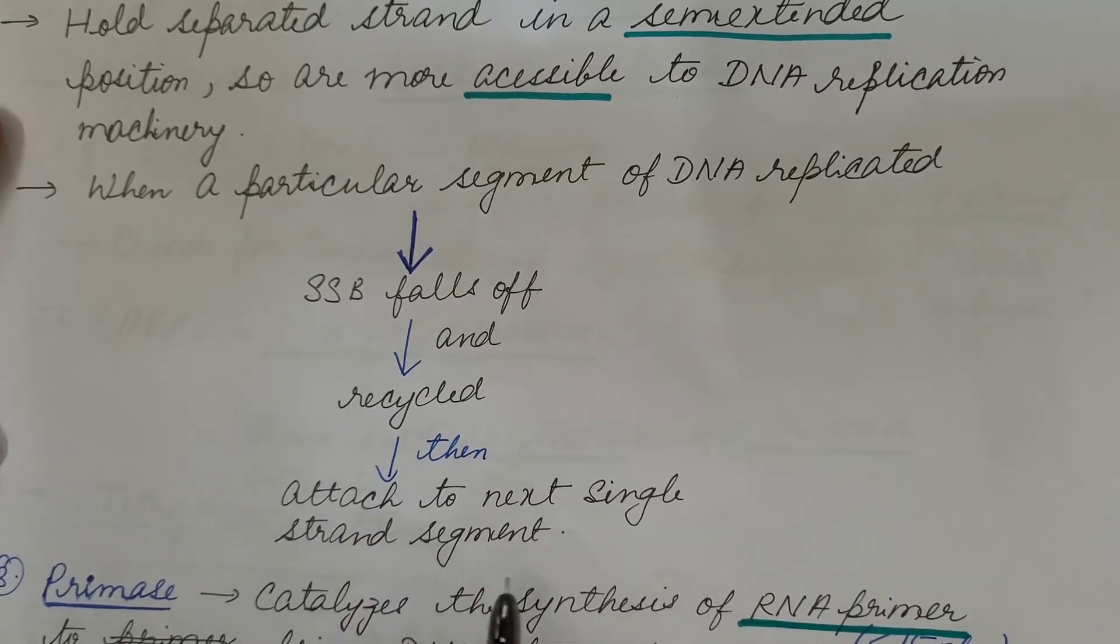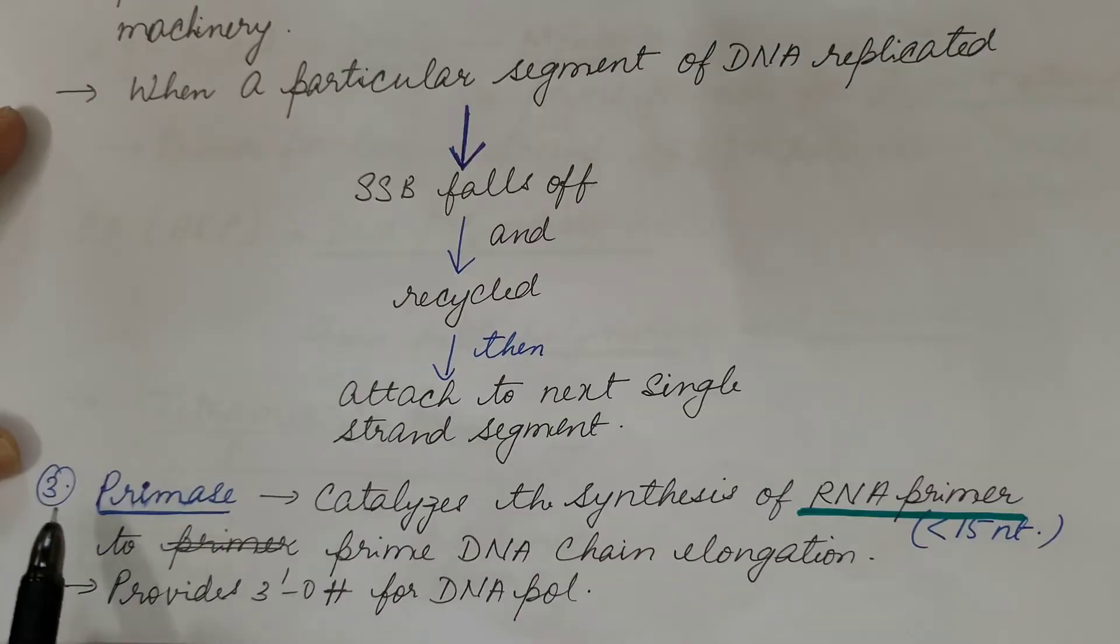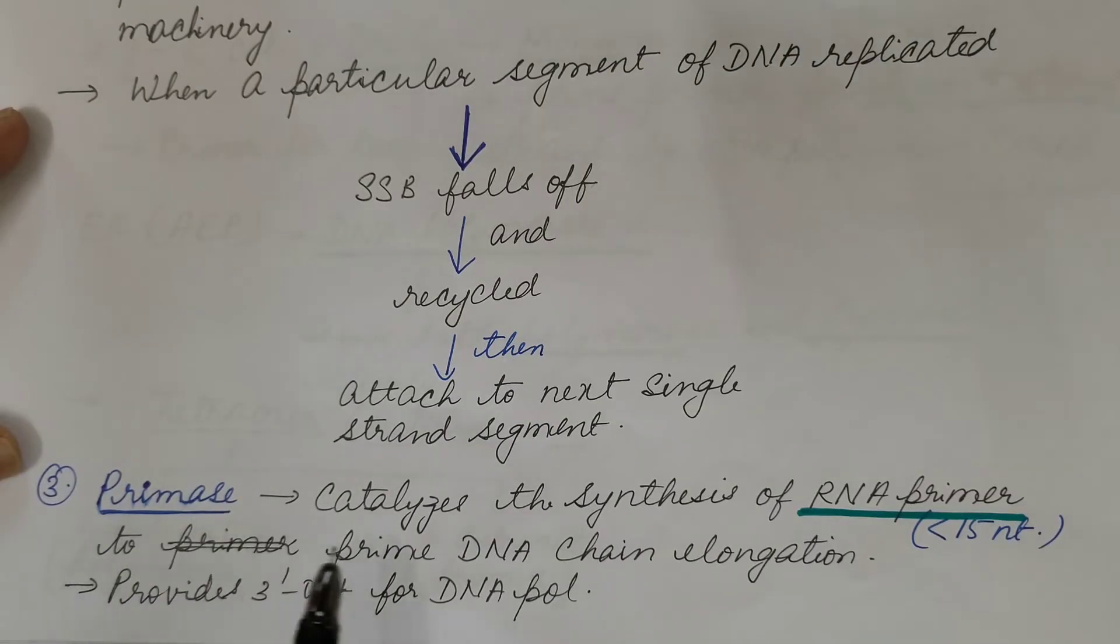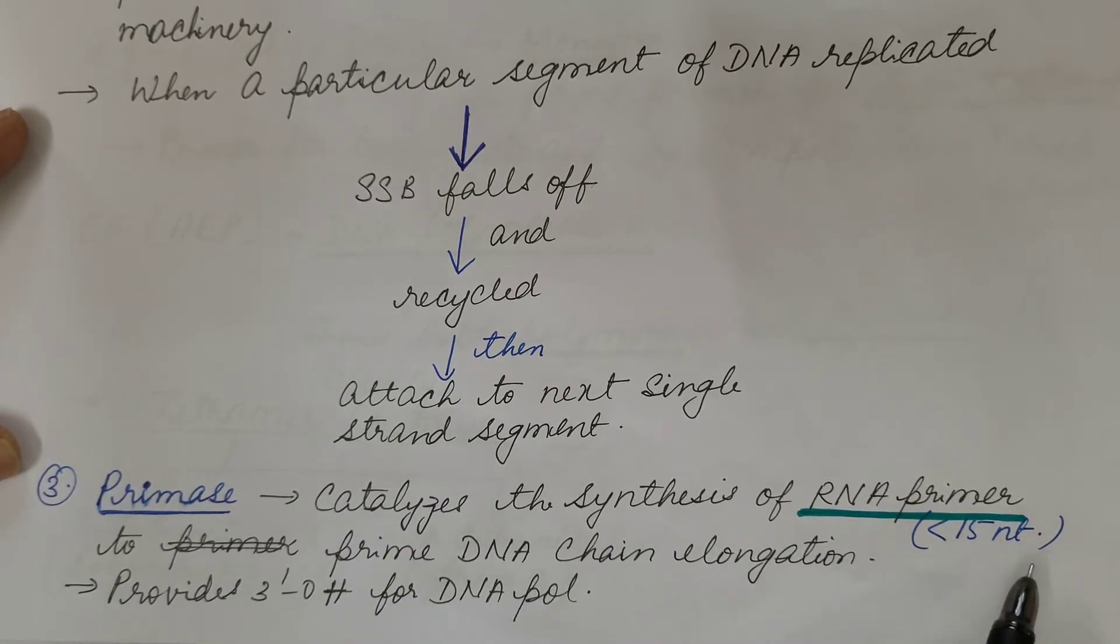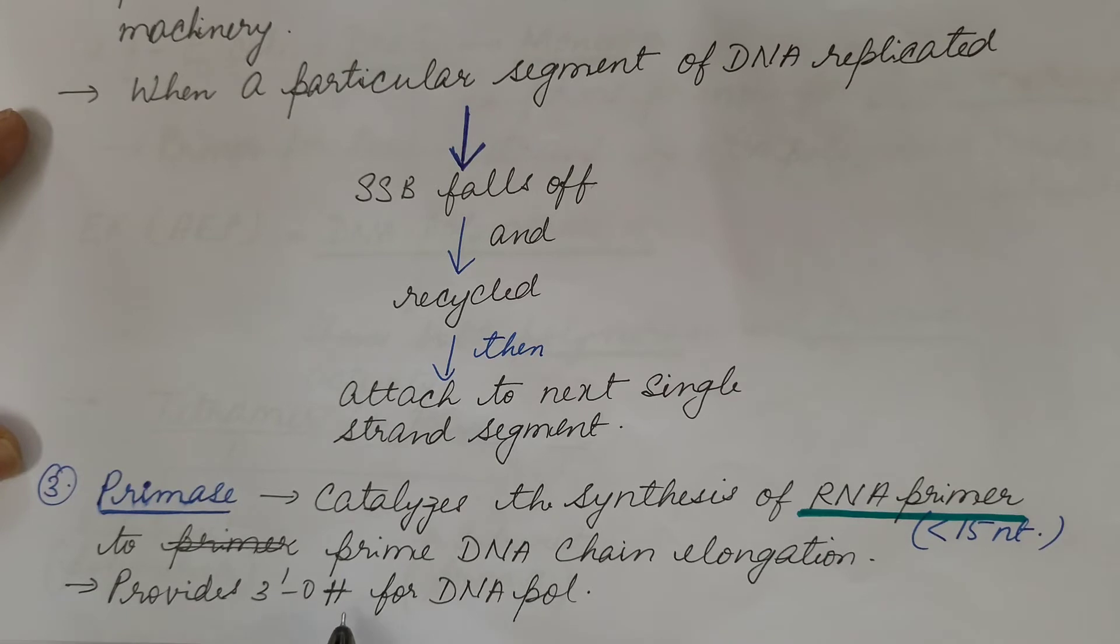Now the third is primase. It catalyzes the synthesis of RNA primer, which is less than 15 nucleotides long, in order to prime the DNA chain elongation. This RNA primer provides 3'-OH to the DNA polymerase, because DNA polymerase cannot itself start the synthesis of the new strand. It requires this 3'-OH group.